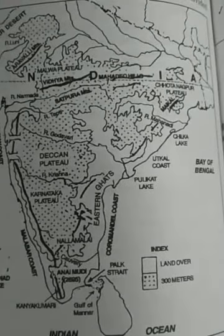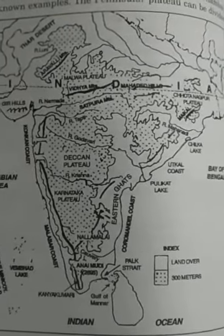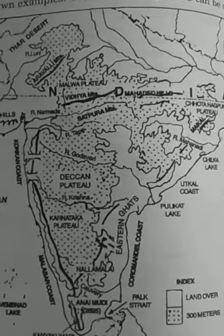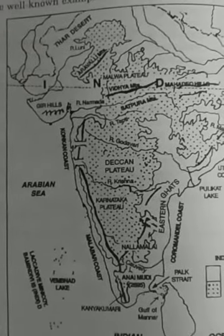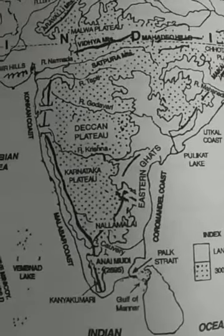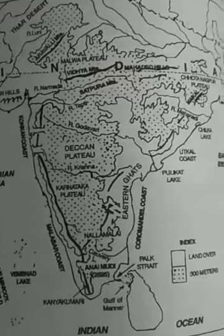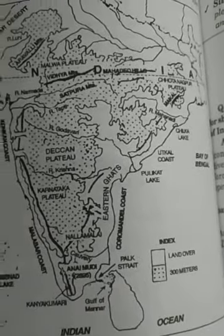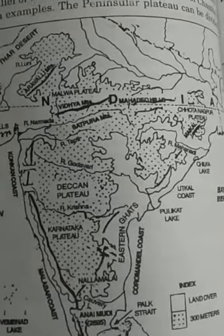Namaskar children. We had previously covered three topics: Deccan Plateau, Central Highlands, and Northeastern Plateau. Now continuing with the next topic of our lecture — coastal plains. Yesterday we had a general discussion about coastal regions, and I told you about the area known as the coastal plains.